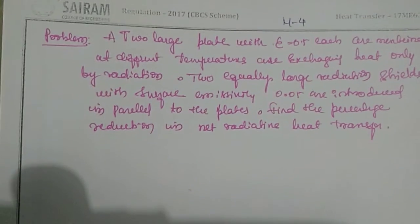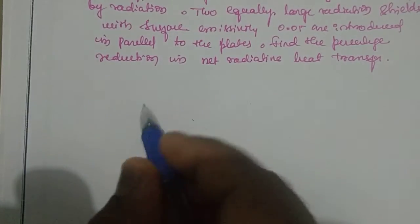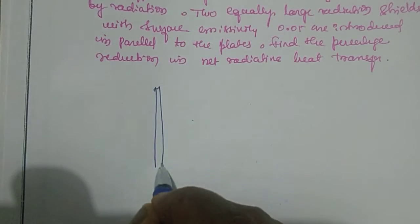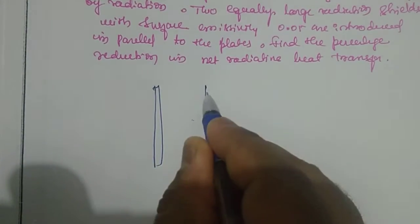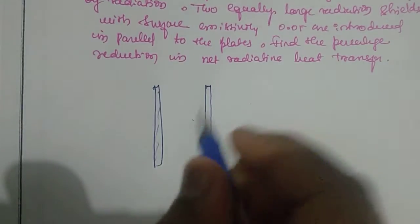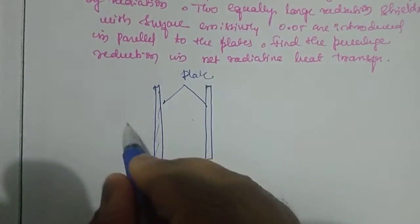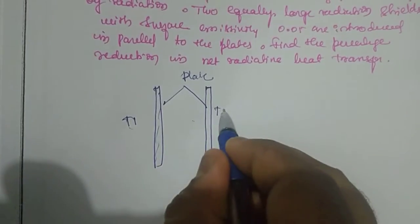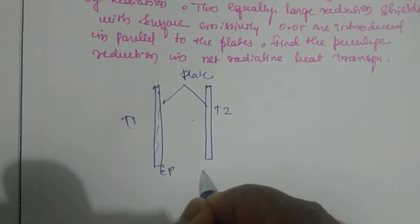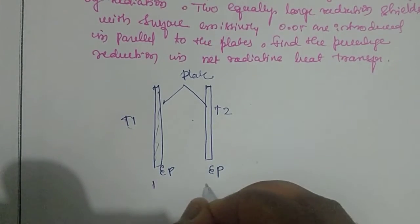Let us analyze this problem by drawing the sketch. In this case there are two plates oriented vertically, having different temperatures T1 and T2. The emissivity of the different plates is given. This is plate 1 and plate 2.